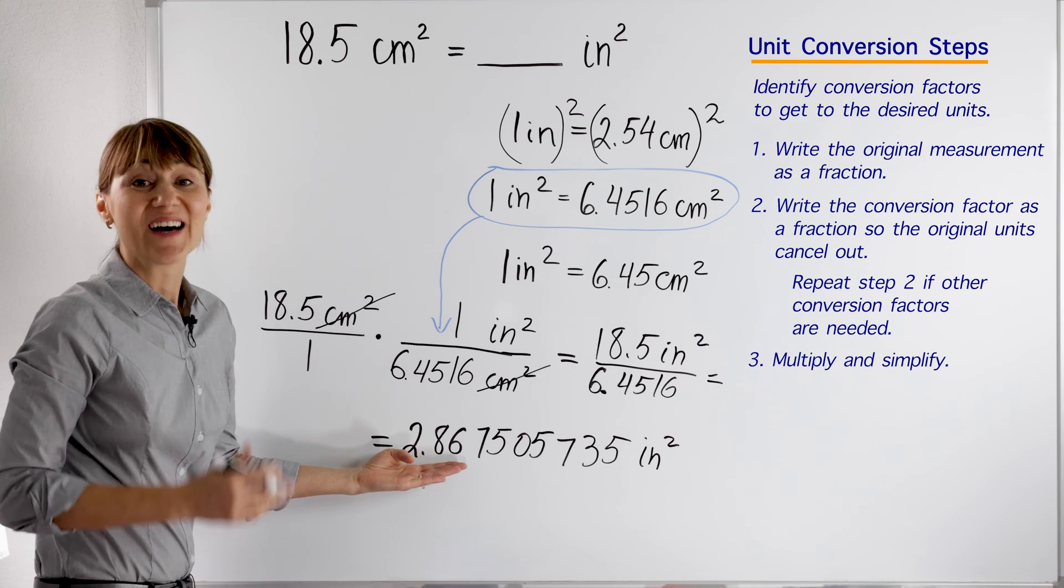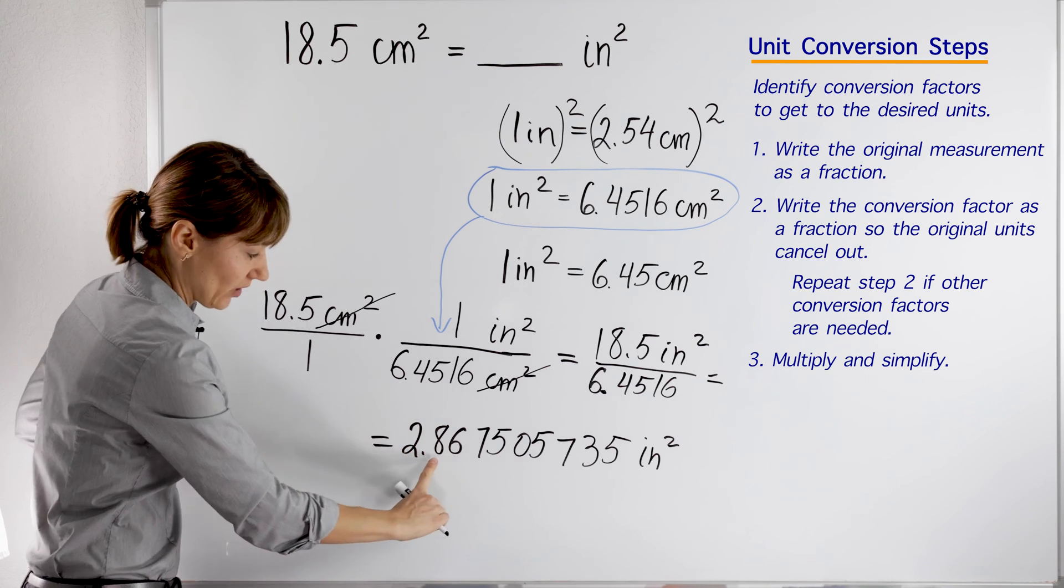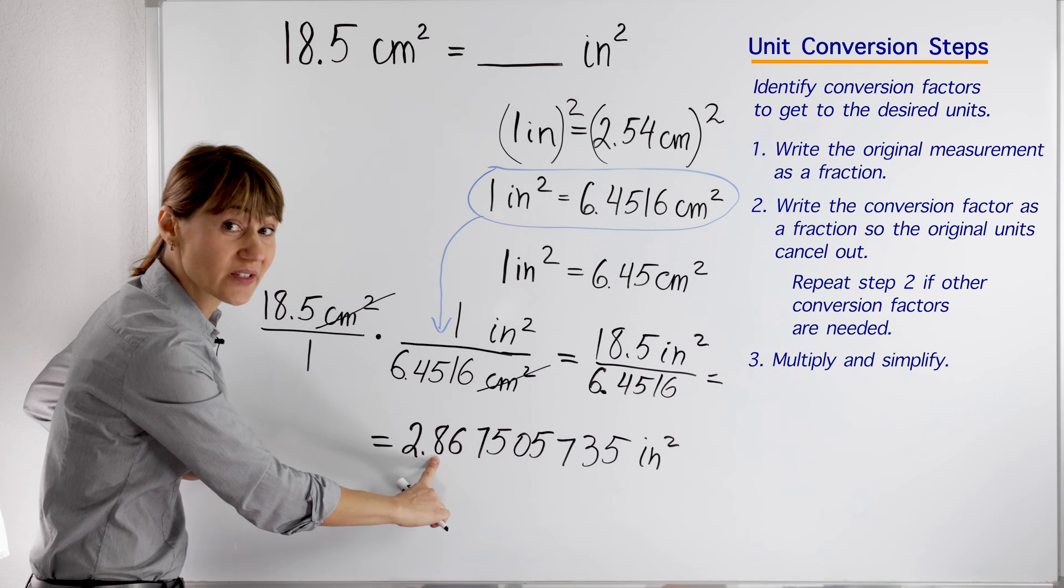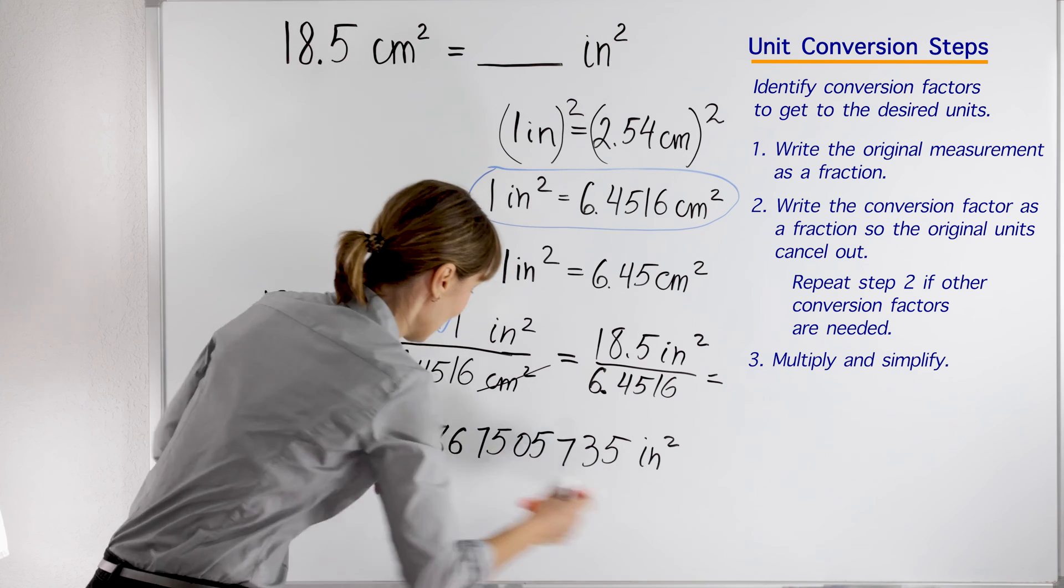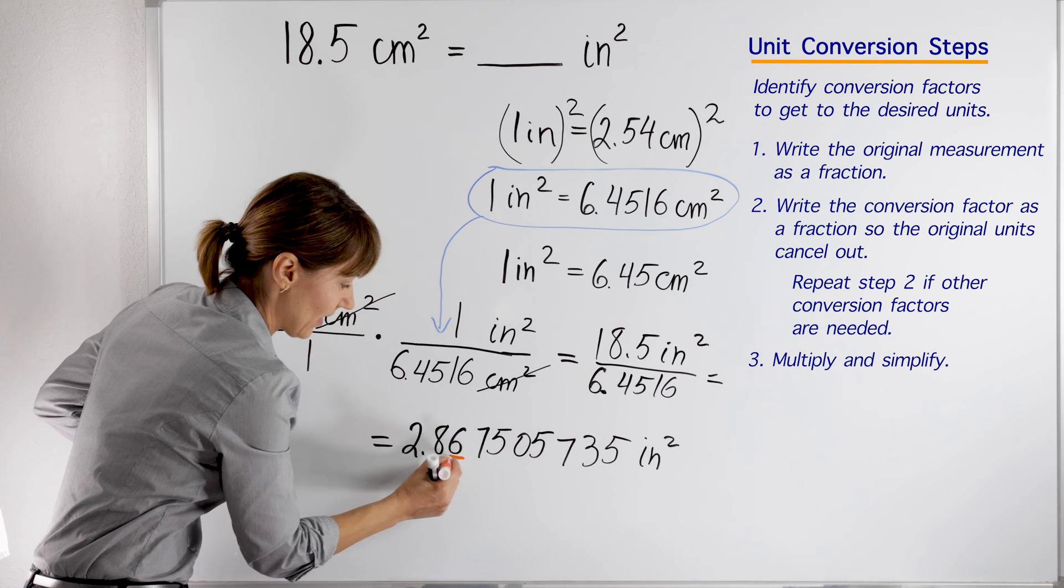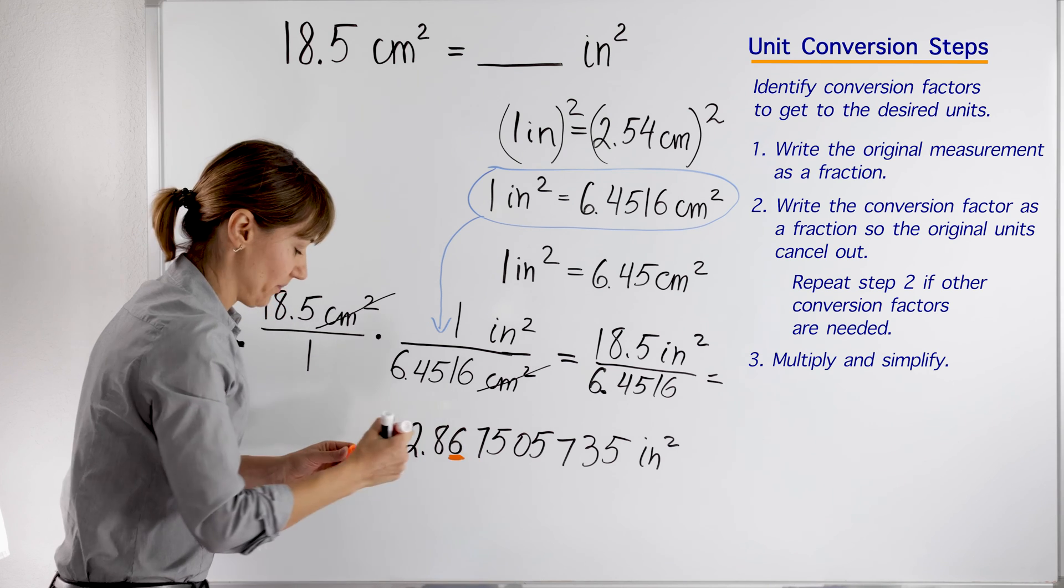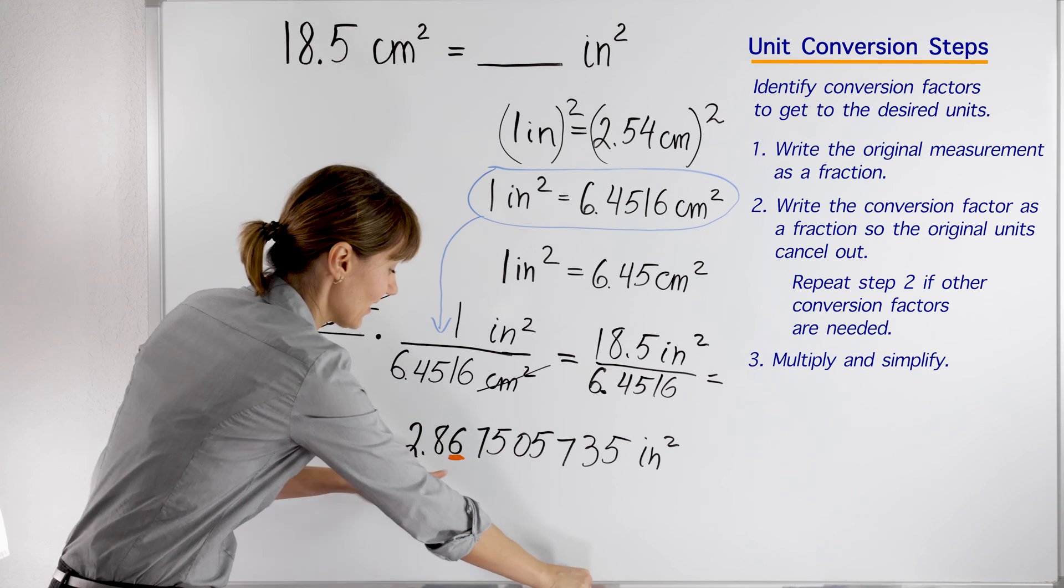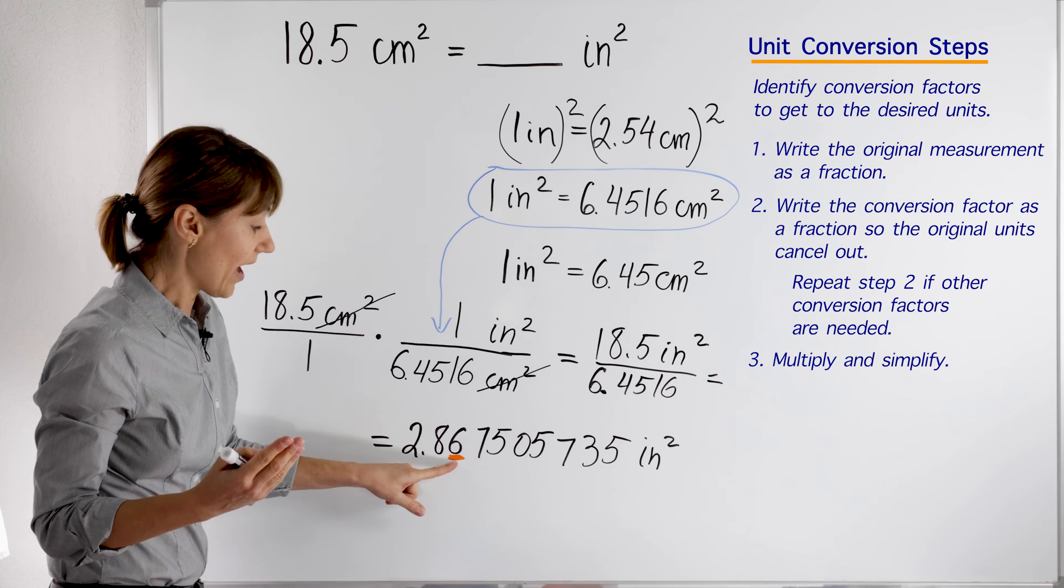We're not going to use this long number. Let's round it to the nearest hundredths. This 8 is in the tenths place, 6 is in the hundredths place, right? Let's underline. We are going to look at the number to the right. The number to the right is 7, which is greater than 5, so we'll round up.